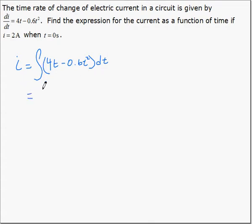Integrating, 4t becomes 4t squared over 2, and 0.6t squared becomes 0.6t cubed over 3, plus c.